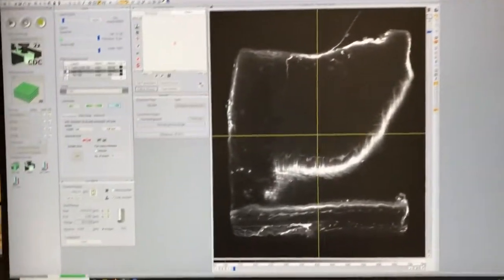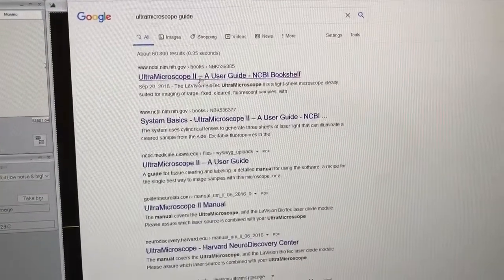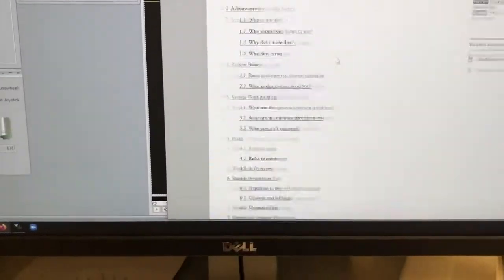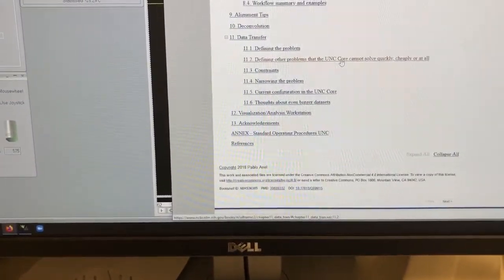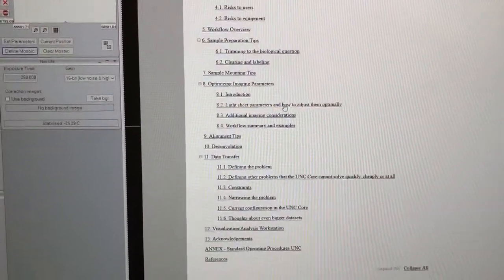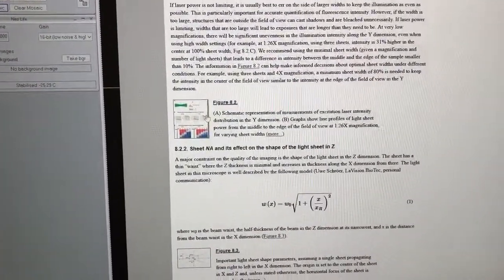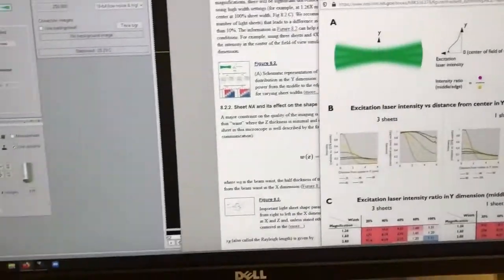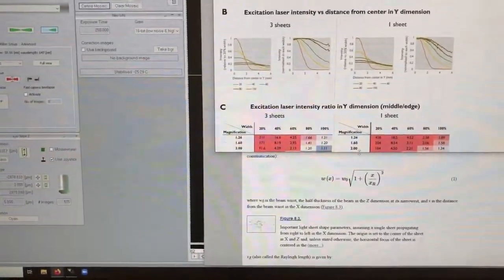The way you do this: there's a table in my guide that explains that relationship. So if you look in here in section 8, there's light sheet parameters and how to adjust them optimally, and then there's figure 8.2, which has an explanation of the width.